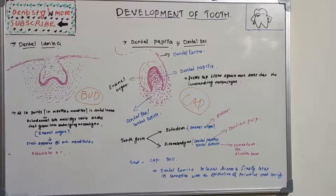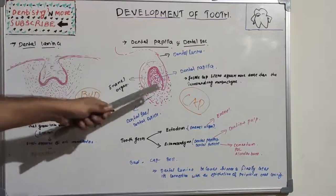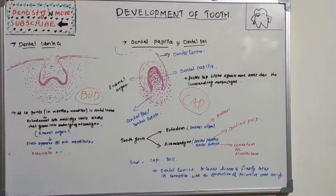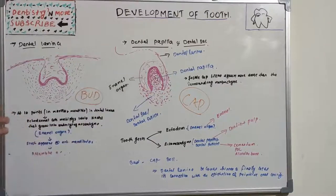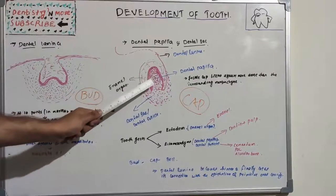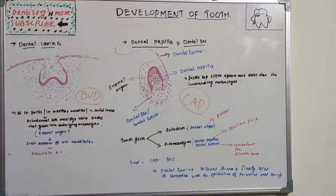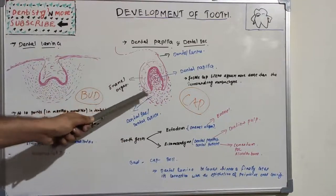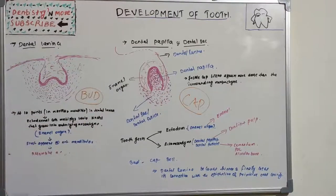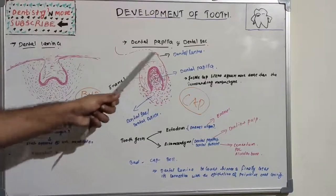Dental lamina is the most primitive structure — from it the enamel organ develops. As it develops more and more, the dental lamina becomes less important or prominent. It differentiates into various structures. The cells and organs giving rise to future cementum, enamel, dentine, pulp, periodontal ligament, and alveolar bone must be understood in terms of where they originate and what is happening inside the enamel organ.